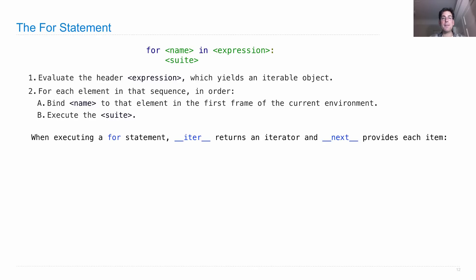So when executing a for statement, iter returns an iterator and next provides each item that we're iterating over. So if I said counts is one, two, three, a list, and then for item in counts, counts is iterable.